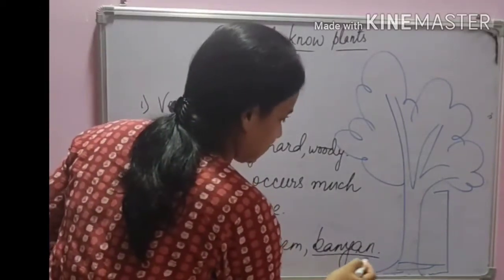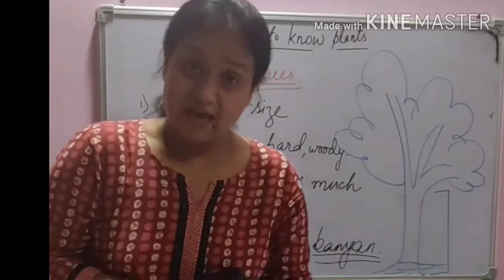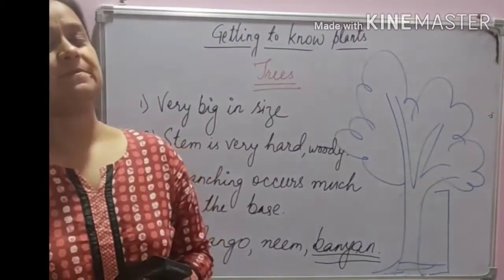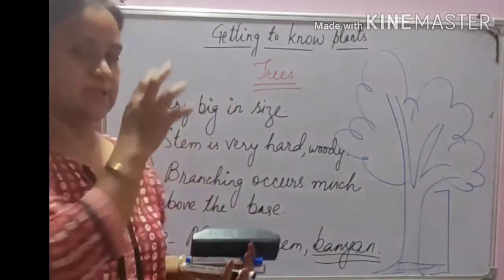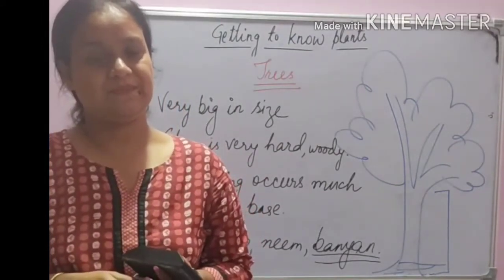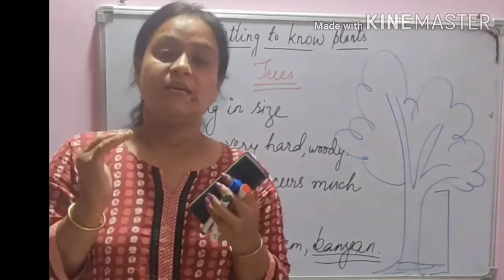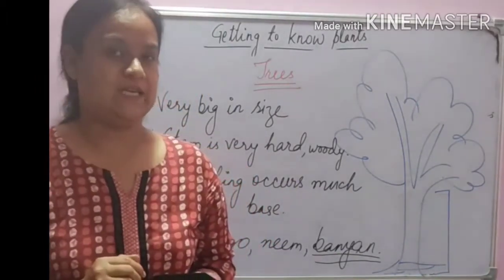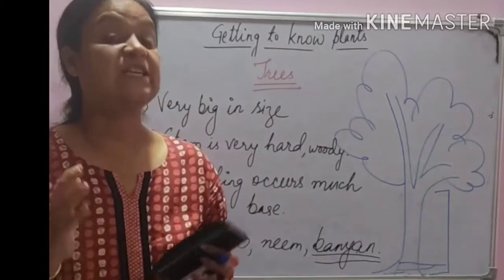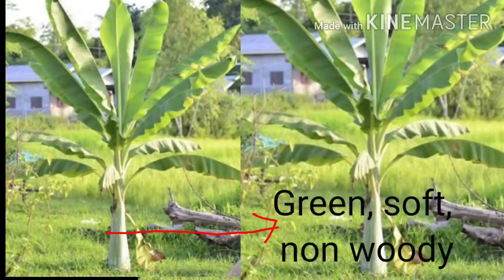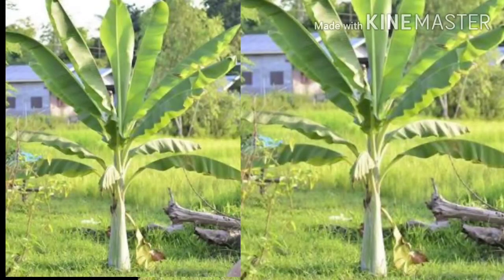Now as I write banyan, here is a question — can you guess what banana is? Is it a tree or a plant? After reading about herbs, shrubs, and trees, can anybody tell me? Let us think about the stem of banana. The stem of banana is non-woody and doesn't have wood — it is green in color. Look at this picture — this is a banana plant, and you can see the stem is green, soft, and non-woody. Also, there is no branching. So, banana is a herb.